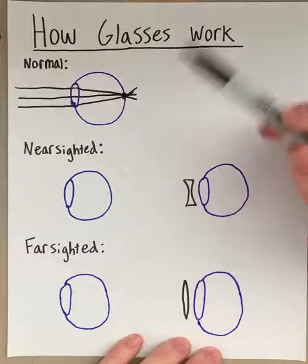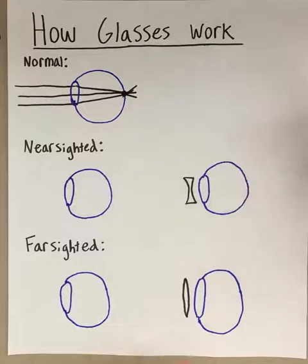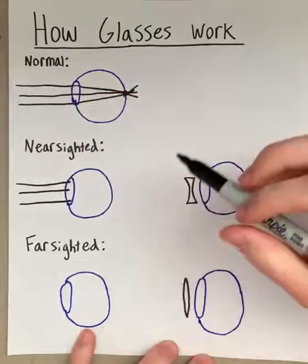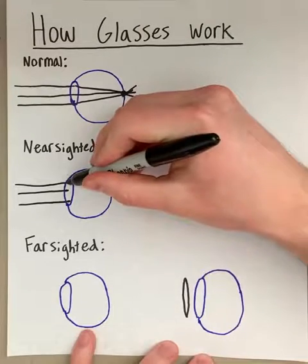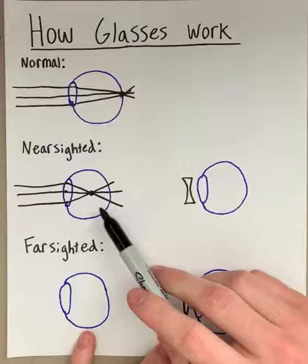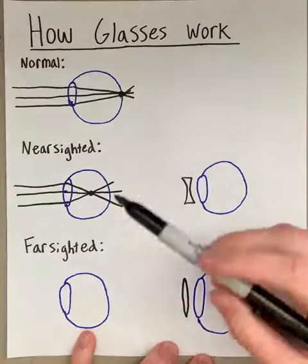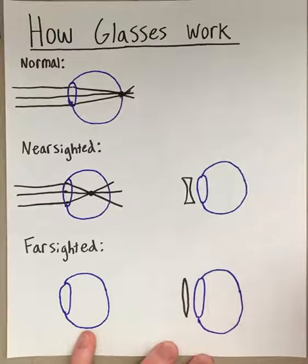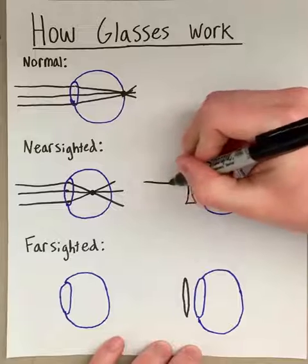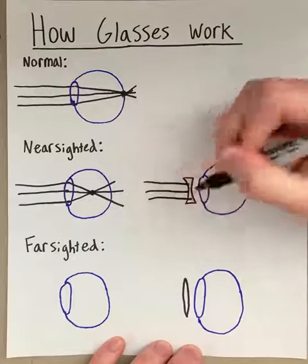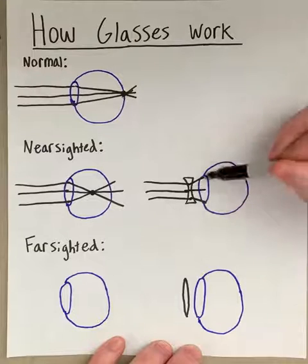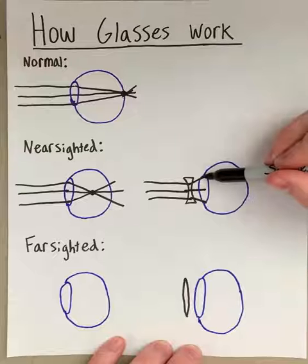For a normal, well-functioning eye that focal point is exactly on the retina. However, some people have nearsightedness — that means the lens is too powerful, so it converges the rays too quickly and the focal point lands in front of the retina, causing blurry vision. A simple way to solve this is putting a concave or diverging lens in front of the eye. The diverging lens spreads the rays a little bit outward, so that the eye's lens then directs them exactly onto the retina.